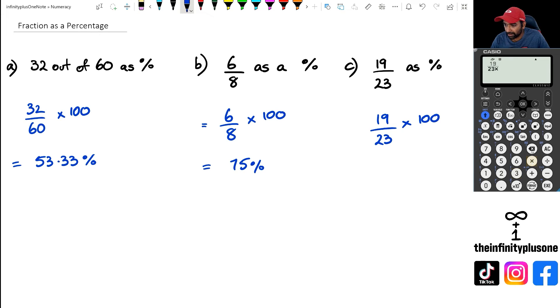We're going to go 19 out of 23 and we're going to multiply—make sure the multiply is in the right space—multiplied by 100, and as you can see this is going to give us an answer of 82.61. So for this question C we're going to write it as 82.61%.